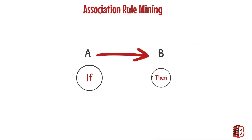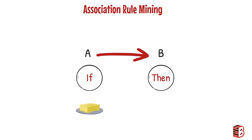Just like the if-then statement in a programming language. For example, if the grocery store customer bought butter, then there is a high chance that he will buy milk too. In this case, we can say that butter and milk is an interesting association.